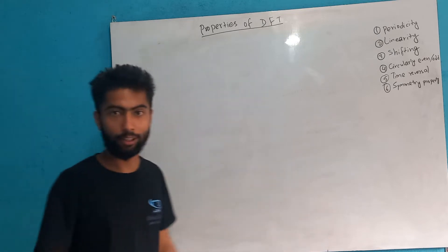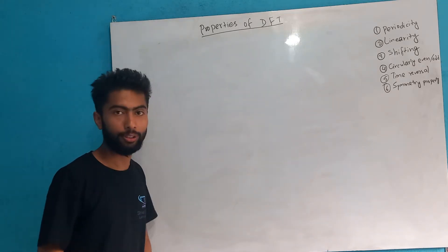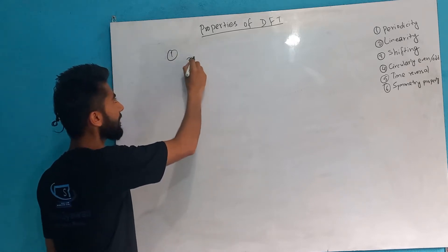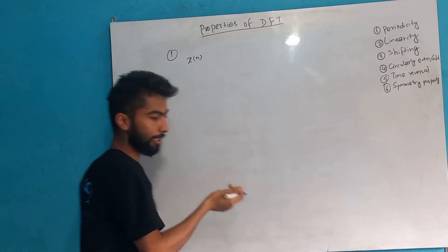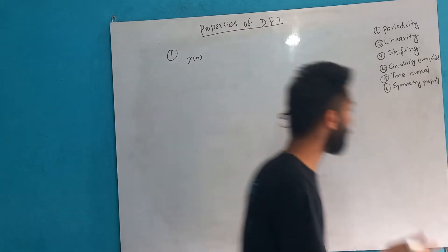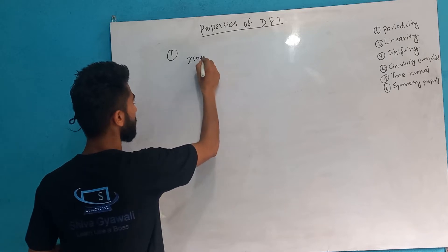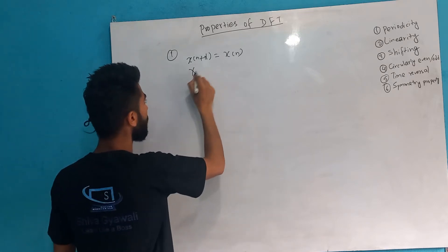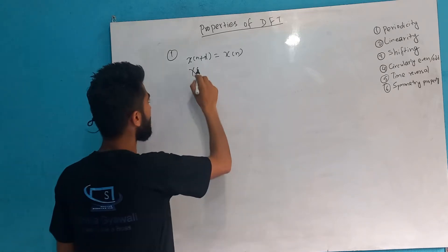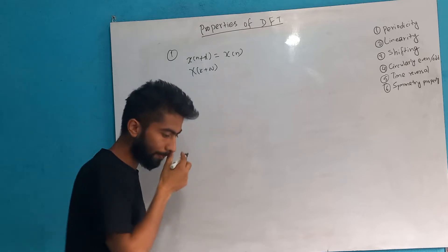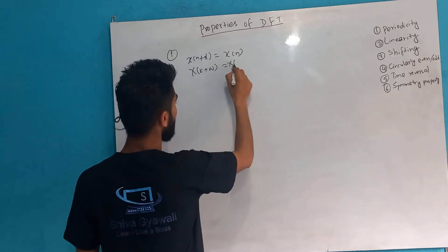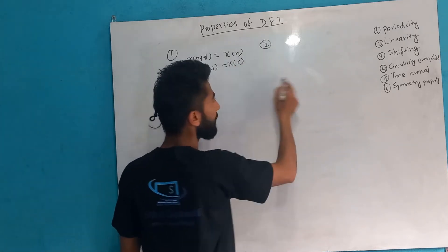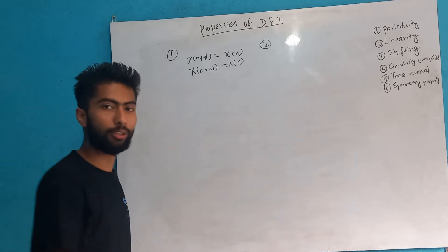I have been doing the list of properties of DFT. What are the properties of DFT? It is a lot of properties. So what do we know about DFT? x[k] plus N — x[k] is equal to N. This is the periodicity property. And what do we know about the linearity property? The linearity property is called the superposition property.